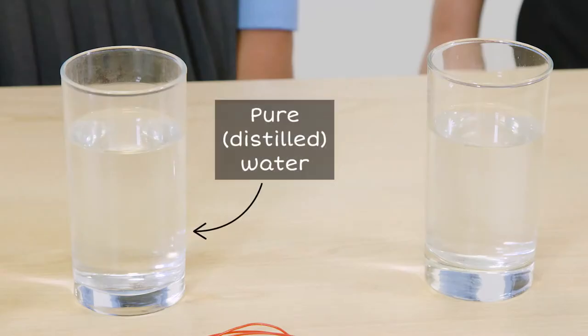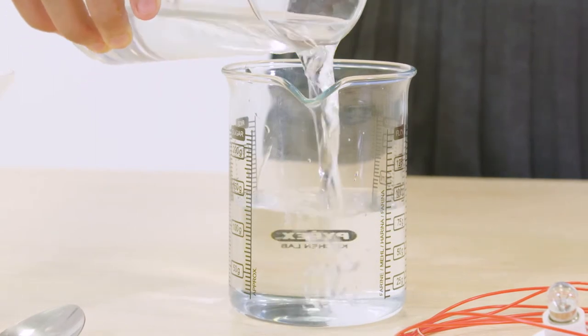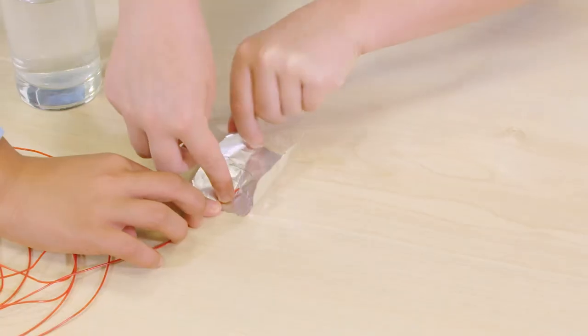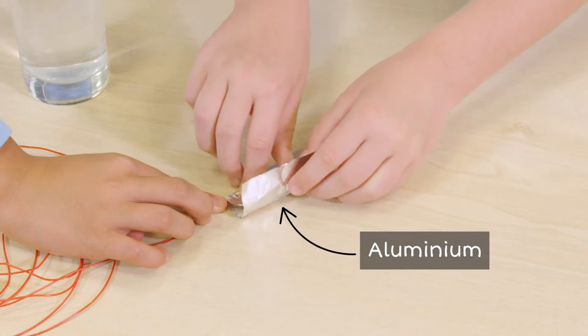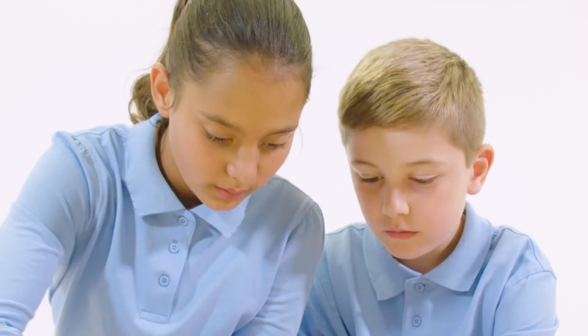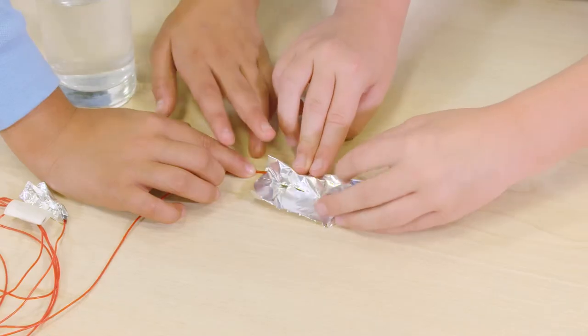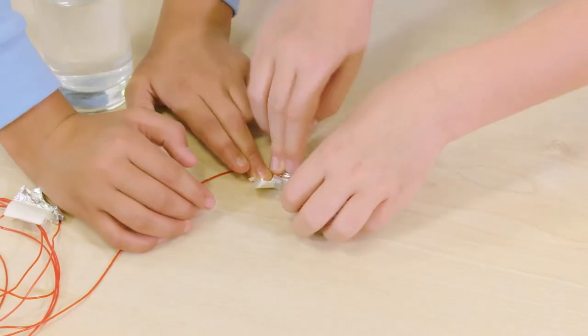First we will see whether pure water conducts electricity. I'm putting 250 milliliters of distilled water into this glass beaker. Our investigator is folding the pieces of aluminum foil and pressing them around the bare wires. Aluminum is a good conductor of electricity and it will give a bigger surface than just the end of the wire.